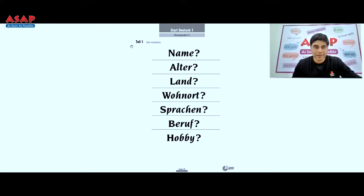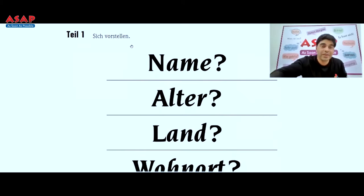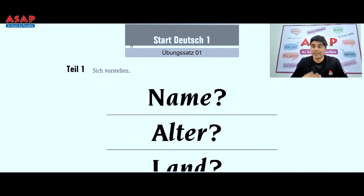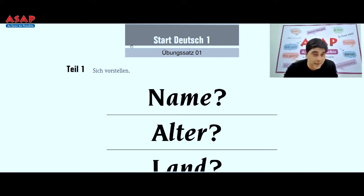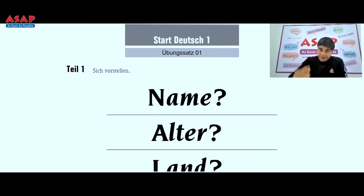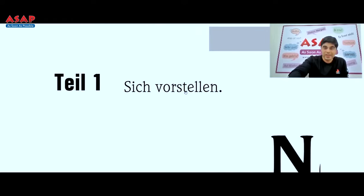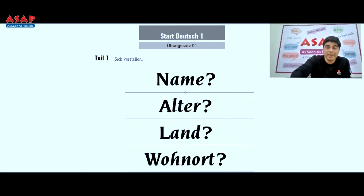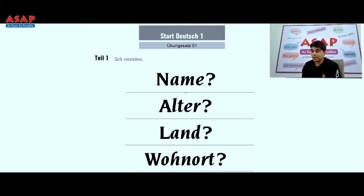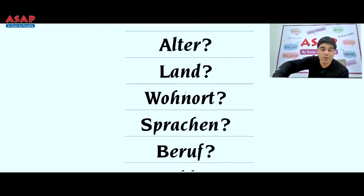Let's start. Here I'm sharing the file. The first part is Tile Eins. In Tile Eins, there is 'Sich vorstellen' — self-introduction. The examiner will not say 'give your introduction'; they may ask 'Können Sie sich bitte kurz vorstellen?' or 'Stellen Sie sich bitte kurz vor.' Students sometimes go blank because they prepared a lot but forgot the word 'vorstellen.' The points given are: Name, Alter, Land, Wohnort, Sprachen, Beruf, and Hobbies.